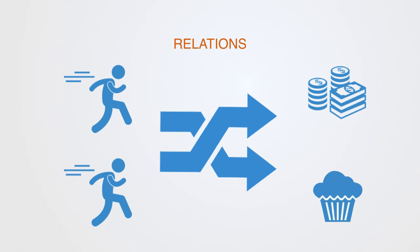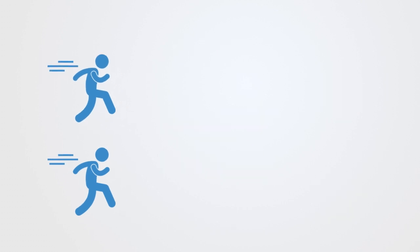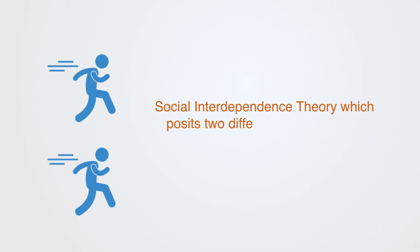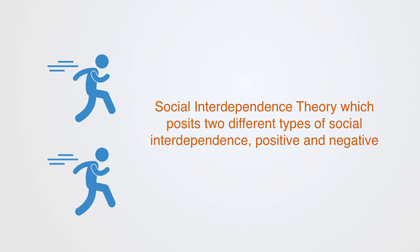And thus, as soon as we have two or more agents, we may have some form of interaction between them as they both follow their agendas. In this interaction, agents become interdependent. This dynamic of interdependence is described within social interdependence theory, which posits that there are two different types of social interdependence: positive and negative.